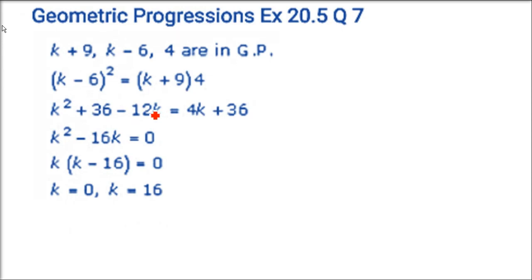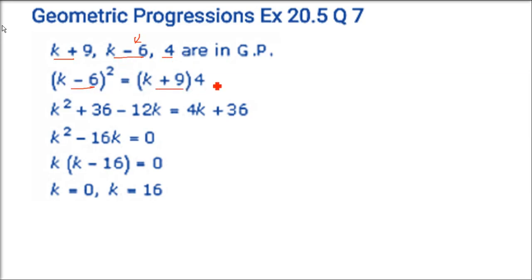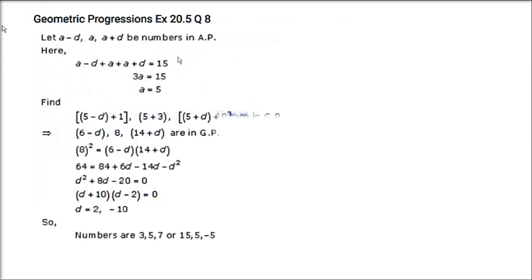Find K such that K+9, K−6, and 4 form three consecutive terms of a GP. Simply, (K−6)² = (K+9)·4. The square of the middle term equals the first and last term. There will be a quadratic equation, and the solution will be K = 0 or K = 16.